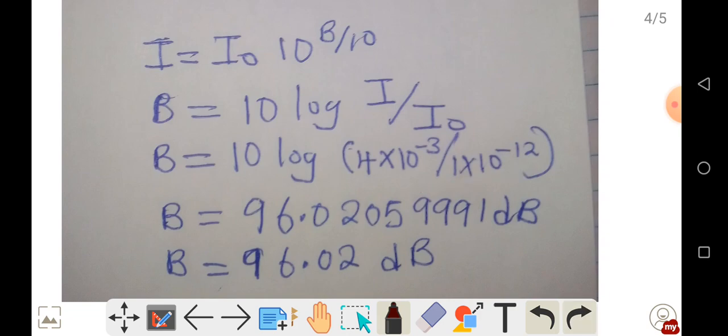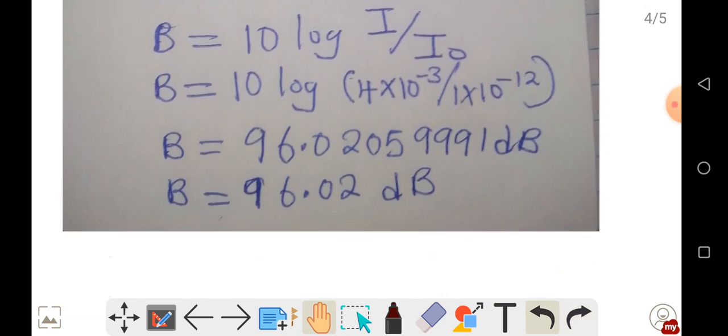When you punch this into a calculator, you get the intensity level to be 96.0205999 decibels, which can be written to 4 significant figures as 96.02 decibels. This is the intensity level they wanted us to calculate.